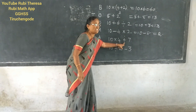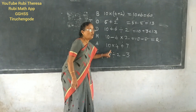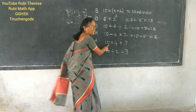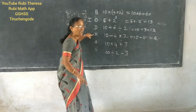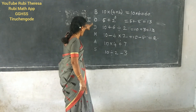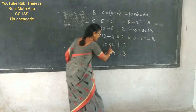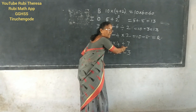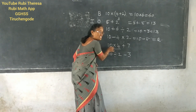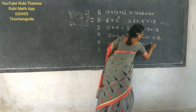Here multiplication and addition — which one do you have to do first? Multiplication. As the order is: bracket, then indices, then divide, multiply, addition, subtraction. Multiplication and addition both come together here, so you have to give first priority to multiplication. So 10 times 4 is 40. 40 plus 7 is 47.